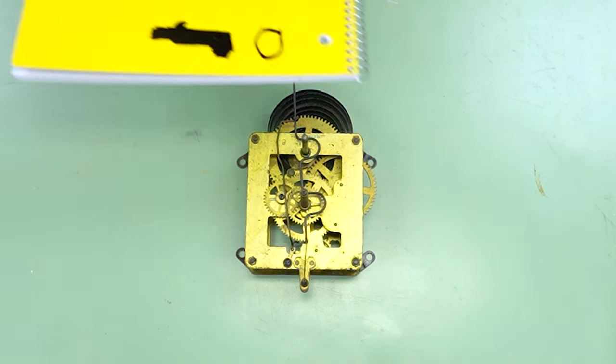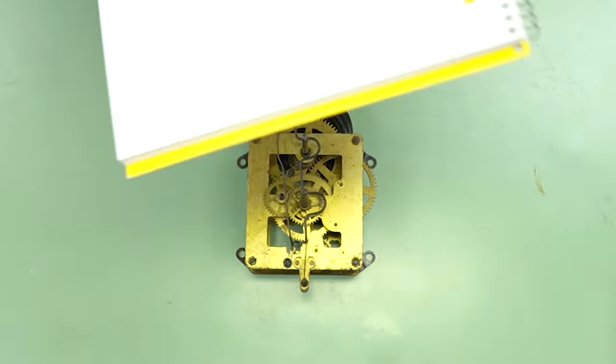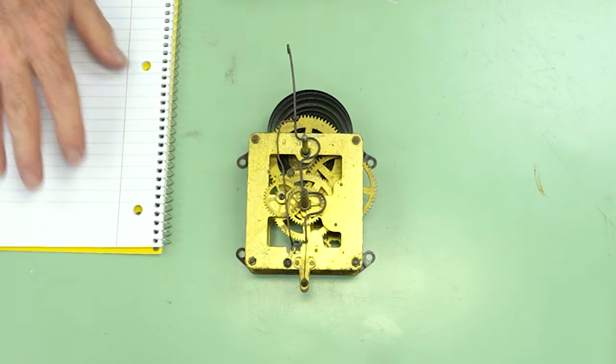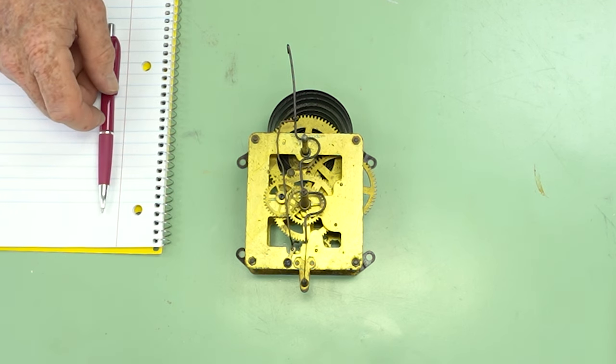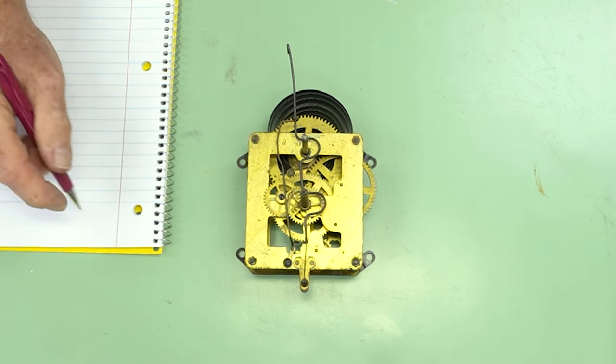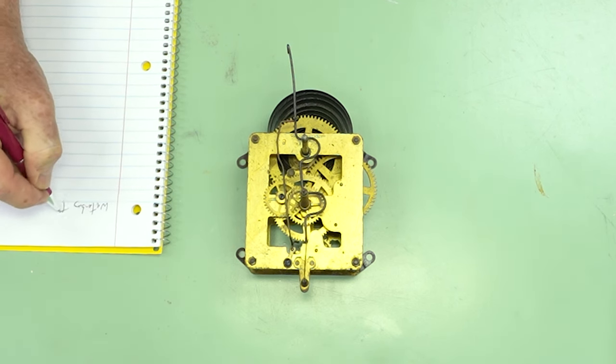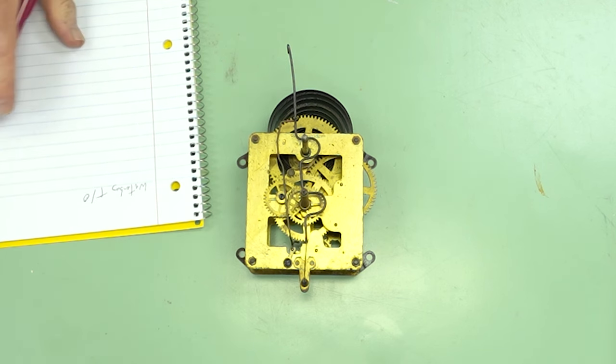I also encourage you at this point in time to come up with a bench book. It doesn't have to be anything fancy. I recommend the spiral bound because it takes up less space on the bench. Pencil or pen is fine. All we're trying to do is make some general notes of what you find with this movement when you're working on it. So I'd write down the date. I'd write down Waterbury, time only. And that'll get us started.